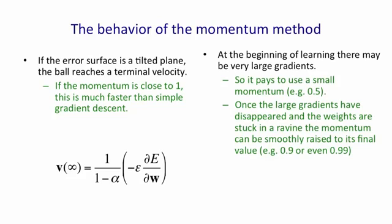So it pays at the beginning of learning to have a small momentum. It's probably better to have 0.5 than 0, because 0.5 will average out some sloshes in obvious ravines.